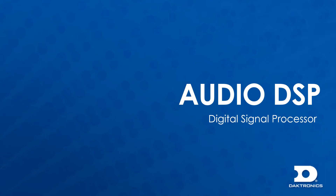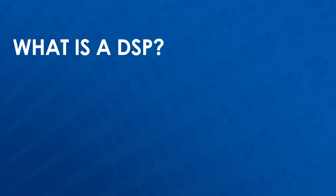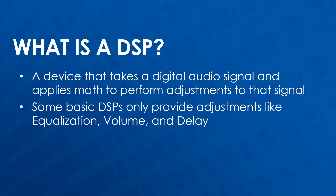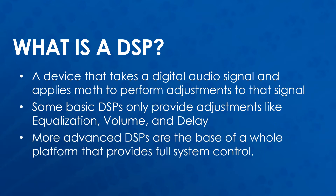In this video, we will introduce different audio DSPs used at Daktronics. DSP stands for digital signal processor, and there are many different varieties out there. In general, a DSP is a device that takes a digital audio signal and applies math to perform adjustments to that signal. Some basic DSPs only provide adjustments like equalization, volume adjustments, and adding delay to signals. More advanced DSPs are the base of a whole system platform that provides full system control and advanced system processing.